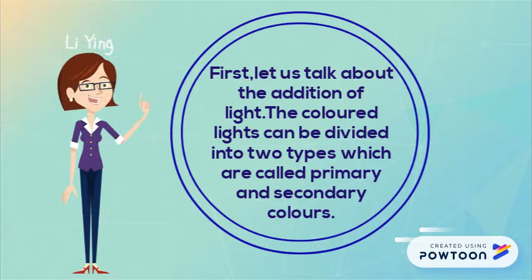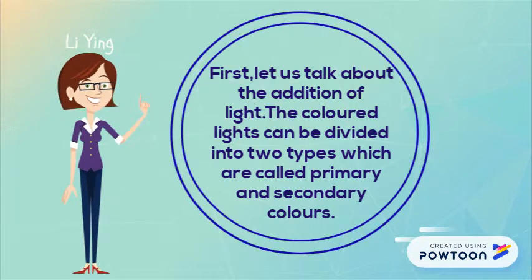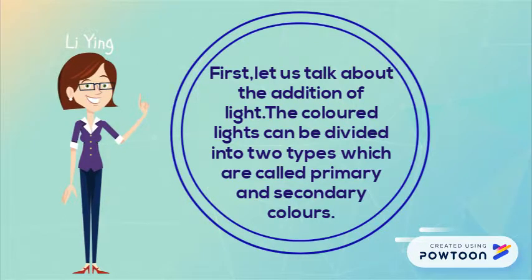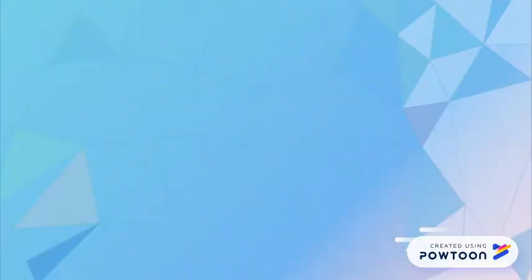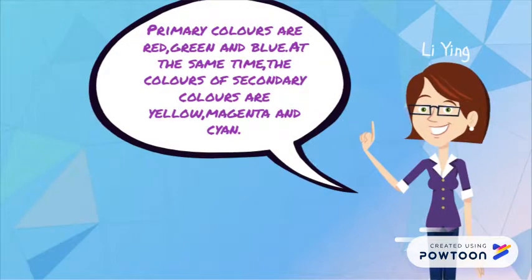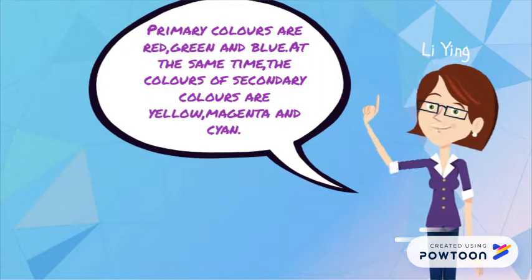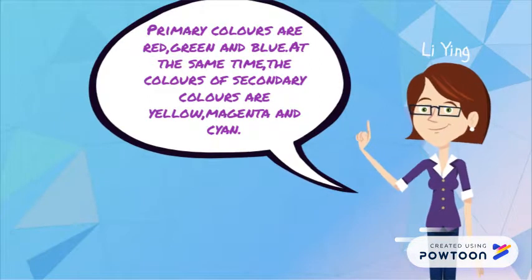Colors of light can be divided into two types which are called primary and secondary colors. Primary colors are red, green and blue. The secondary colors are yellow, magenta and cyan.